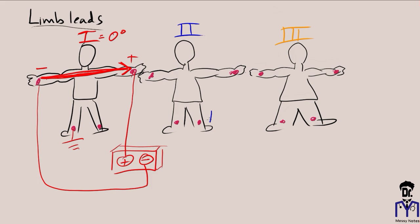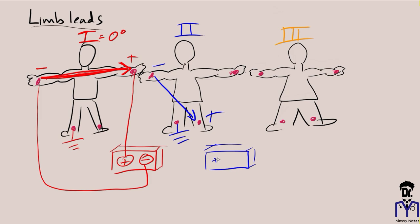Lead II is created by making the left leg positive and the right arm negative — the right ankle is still ground. The EKG machine denotes what's positive and negative; you just place the electrodes in the right spots. Lead II's angle of orientation will be 60 degrees.